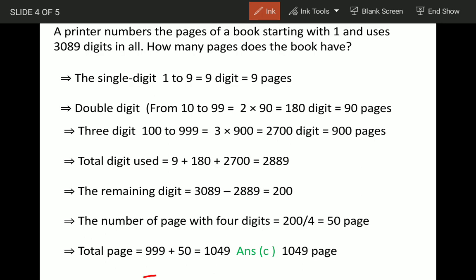So total number of pages are 999 plus 50, because these 9, 90, and 900 will total up to 999, and then 50 here. So total are 1049. Answer is option C.